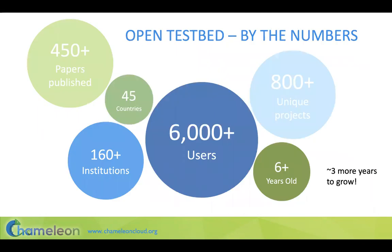Chameleon in numbers: it was funded in 2014 and opened to the public in July 2015. Since then, we've served over 6,000 users working on over 800 unique research, education, and emergent application projects. We support computer science research, computer science education, and emergent applications — the one thing we don't support is production science. We are funded through the end of 2024, so we've got almost three years to grow.